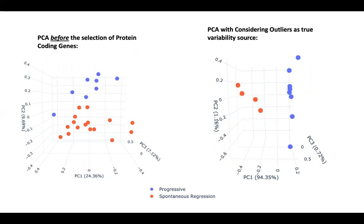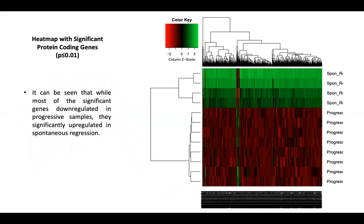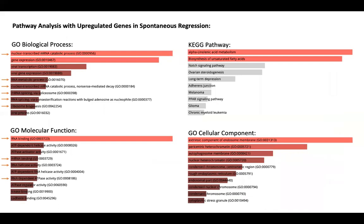Therefore, I checked the clinical data of these samples, but there was no difference between other samples. So the difference had to be in their biological background. That's why I chose the most diverse samples to compare with progressive samples to see the real difference between these two groups in terms of gene expression pattern. You can see from the second scatter plot there was significant improvement with the two groups well separated. This is the heat map of the protein-coding genes showing the patterns between spontaneous regression and progressive samples. It's obvious that most of the genes were upregulated in spontaneous regression while they were downregulated in progressive ones. In order to indicate the involved pathways, I made an enrichment analysis.